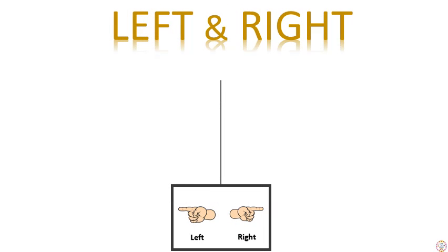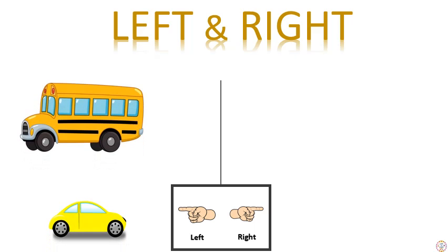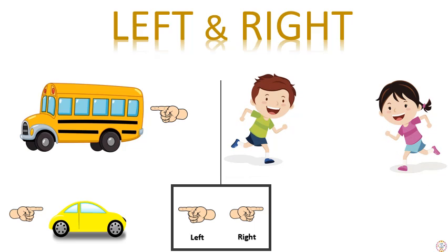Now I'll be sharing a set of pictures and you have to find out which one is towards left and which one is towards right. We have a school bus and a car. Can you tell me which one is facing left and which one is facing right? Yes, the school bus is facing left and the car is facing right. In the second set of pictures, can you find who is moving towards right and who is moving towards left? Yes, the girl is moving towards left and the boy is moving towards right.